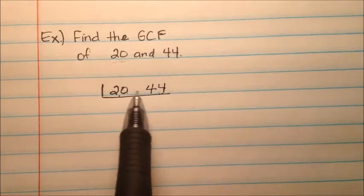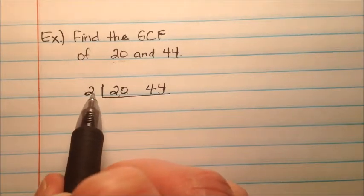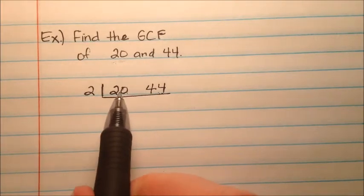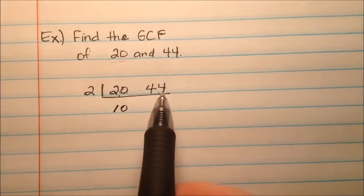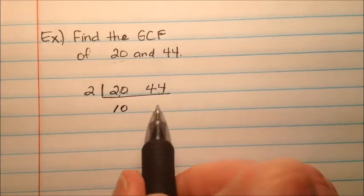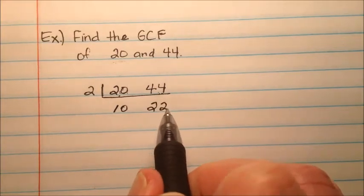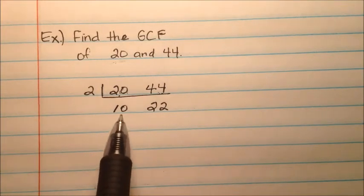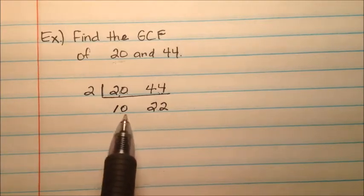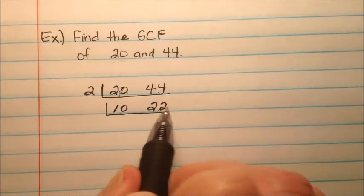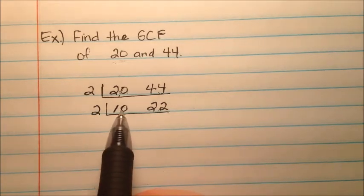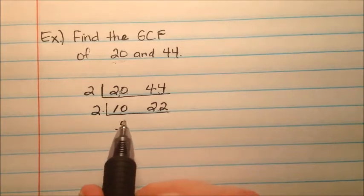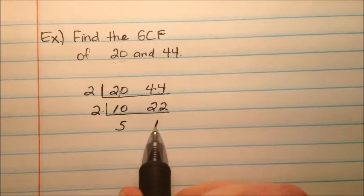I know they're both even, so the least I can do is take a 2 out, and then divide each number by 2. So 20 divided by 2 is 10, and 44 divided by 2 is 22. They're both still even, so I can take another 2 out: 10 divided by 2 is 5, and 22 divided by 2 is 11.